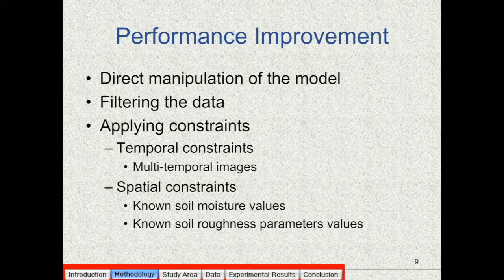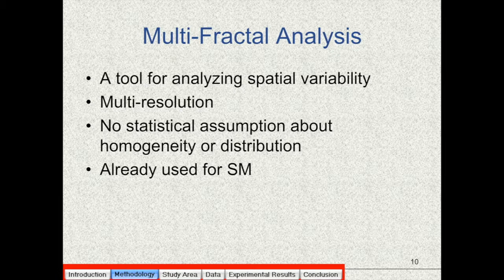Our approach is different from these in that we work on soil moisture values after it has been estimated by the model, the IEM. For this purpose, we use a tool for analyzing the spatial variability of soil moisture images that come from the IEM. This is called multi-fractal analysis which is multi-resolution analysis. No statistical assumption about the distribution of the soil moisture values are done here and it has already been used for soil moisture not in the context of estimation of soil moisture but for downscaling soil moisture values.